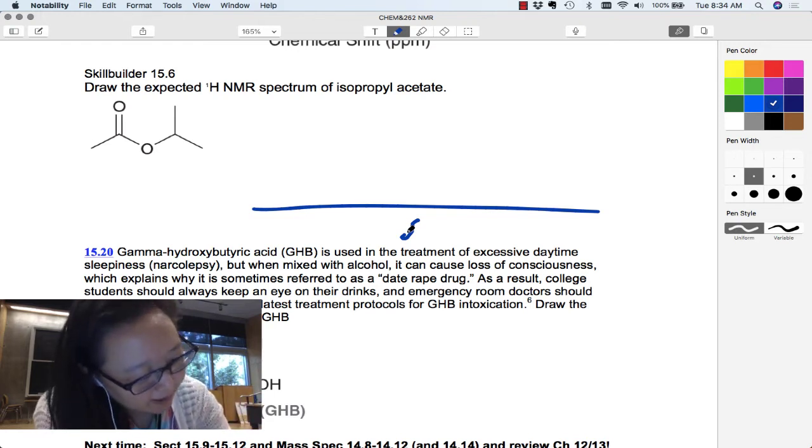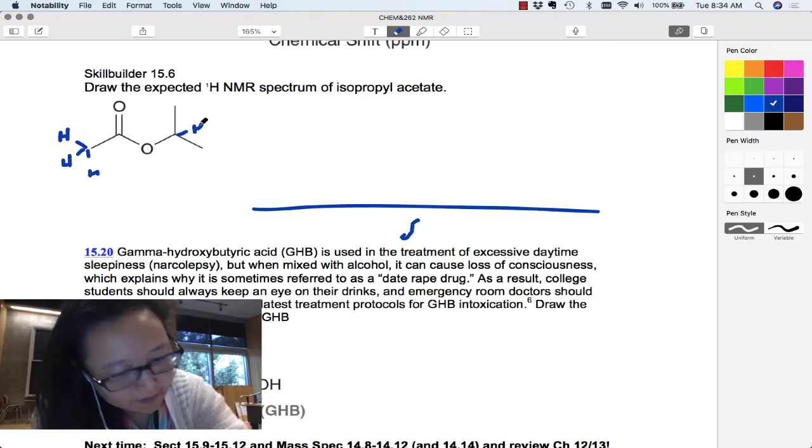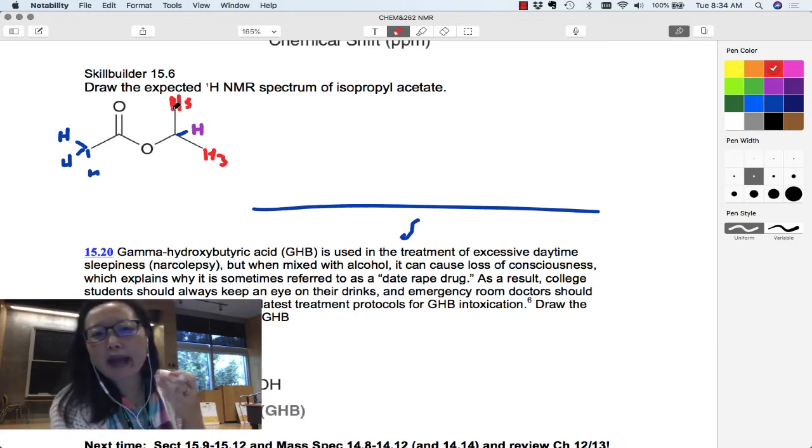So for example, I see methyl hydrogens here. I see another kind of hydrogen here. I see another kind of hydrogen here, and these are equivalent to each other. So I know that I'm going to have one, two, three kinds of hydrogens, three peak clusters.